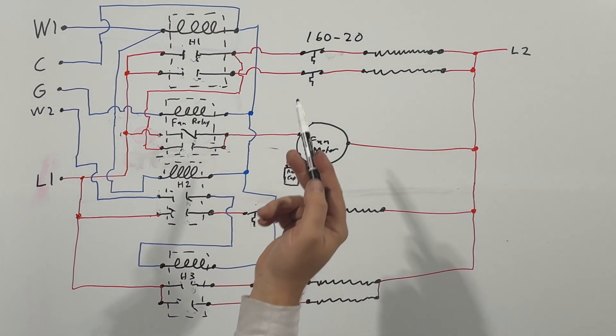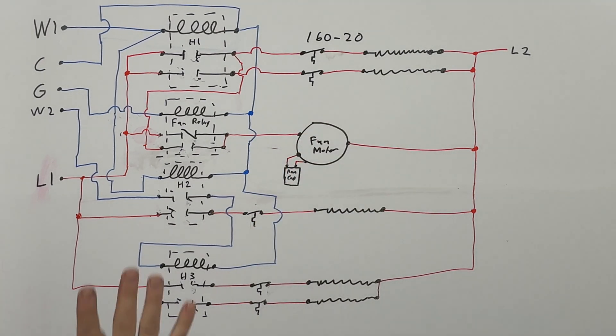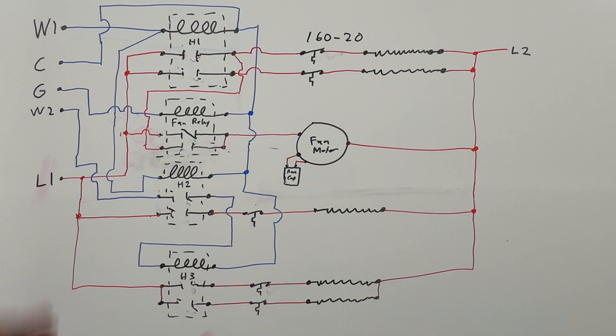And then when they get 20 degrees colder than 160, so that'd be 140, when temperature drops down to 140 they reset and close again. So this is a basic, basic setup of how an electric only heater works.